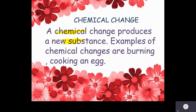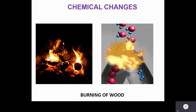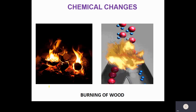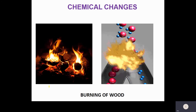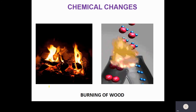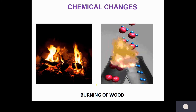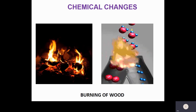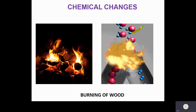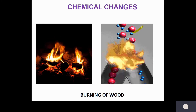We will understand chemical change with the help of examples. Take burning of wood: when you burn a piece of wood, you ultimately get ash. Along with ash, gases are also produced. Wood comprises carbon, and when carbon burns in the presence of oxygen, it produces carbon dioxide gas. So there is a formation of new substances — ash and carbon dioxide — and that is why burning of wood is considered a chemical change.